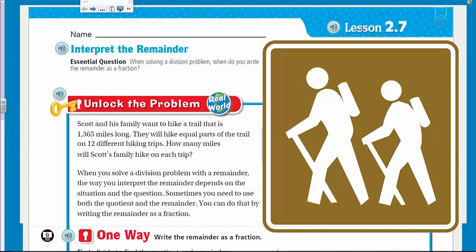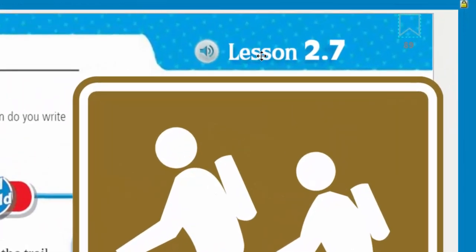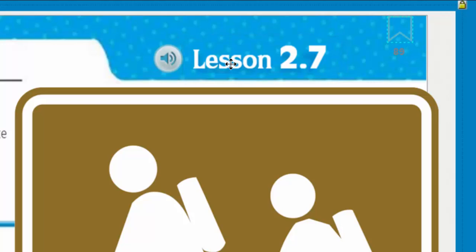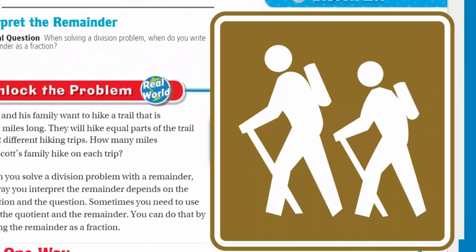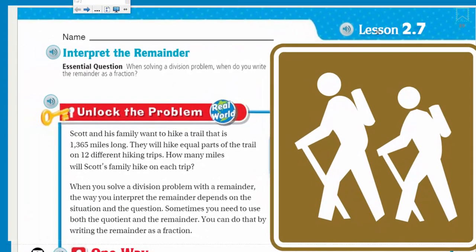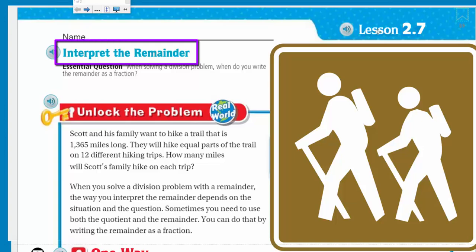Yes, they just seem to never end, don't they? We have one more. We are doing lesson 2.7. We have these hiker dudes, which from the last video I bet means this problem has something to do with hiking — one of my favorite things to do when I'm not making videos for you guys. We're going to look over here and it says interpret the remainder.